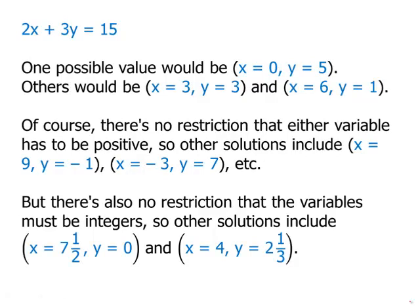Also, there's no restriction that the variables must be integers. So other solutions include things like x equals 7 and a half, y equals 0, or x equals 4, and y equals 2 and a third. So just on this page, notice we have 1, 2, 3, 4, 5, 6, 7 solutions for this. And it's certainly clear we could get many, many more.